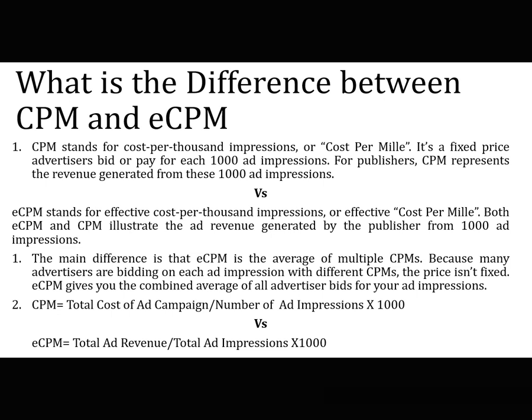The second question is: what is the difference between eCPM and CPM? CPM stands for cost per thousand impressions, or cost per mile. It is a fixed price advertisers bid or pay for each thousand impressions. For publishers, CPM represents the revenue generated from those thousand ad impressions. eCPM stands for effective cost per thousand impressions, or effective cost per mile.